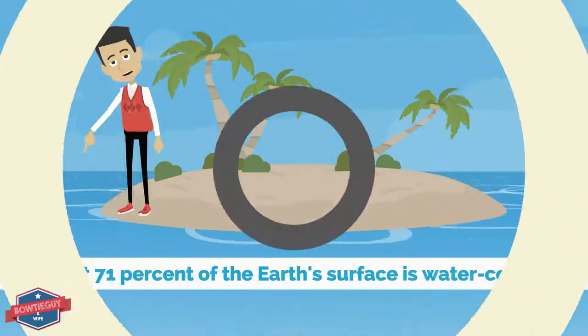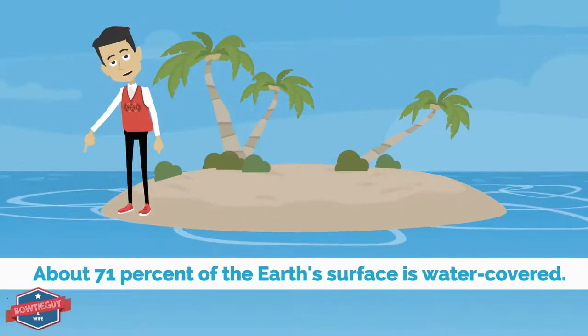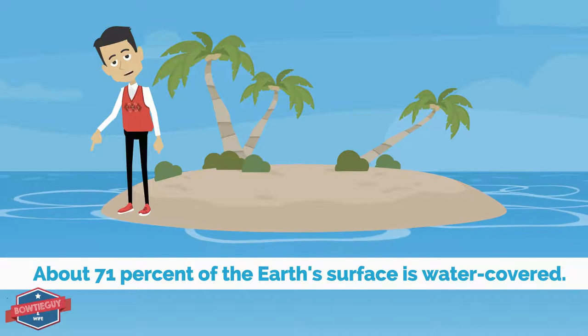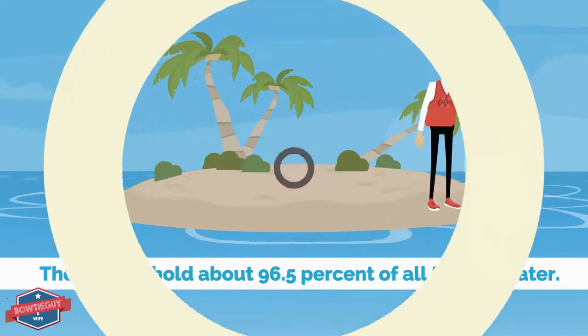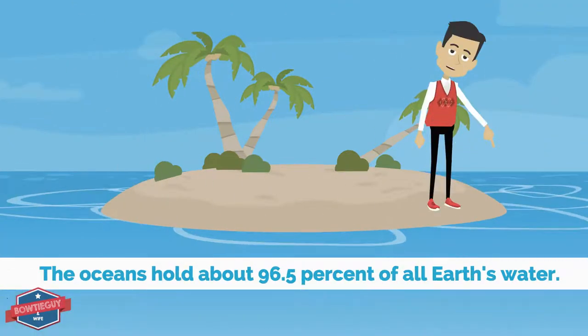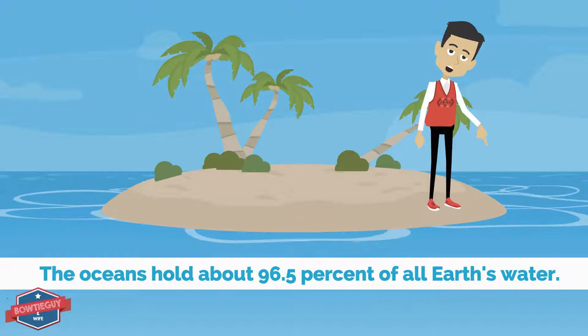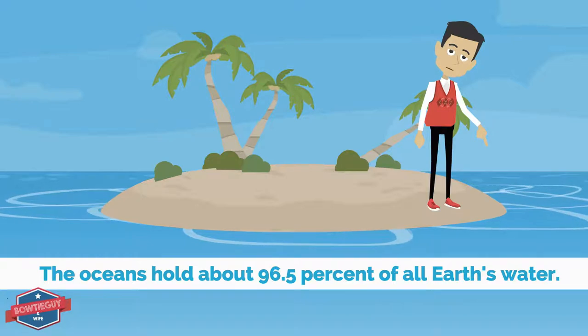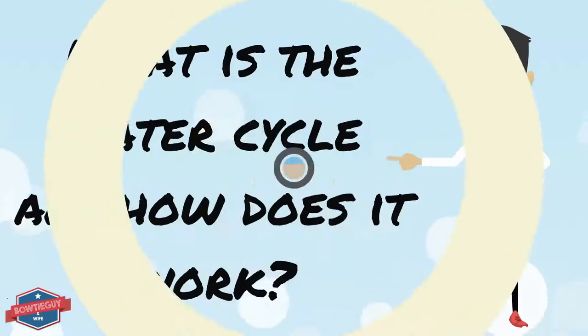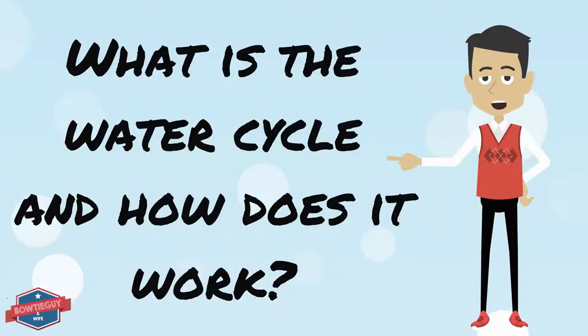About 71% of Earth's total surface area is covered with water, and 96.5% of all the water found on Earth is found in the oceans.